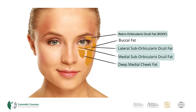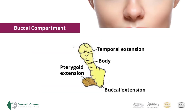The deep medial cheek fat lies on the periosteum of the maxilla, with the medial part being located under the nasolabial compartment. The lateral aspect is found under the superficial medial cheek fat. The buccal fat is found anterior to the ramus of the mandible and has multiple extensions, which include the buccal extension, the temporal extension and the pterygoid extension.